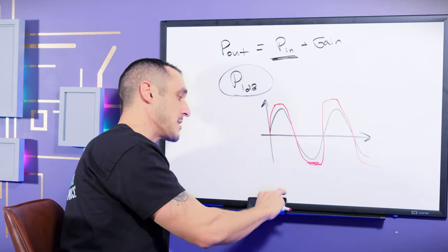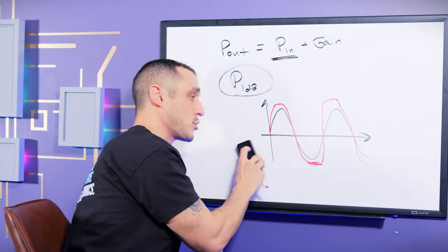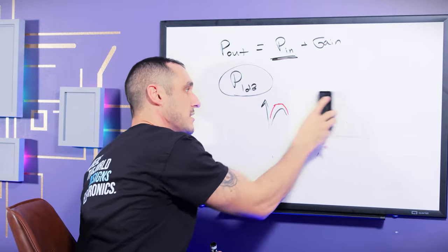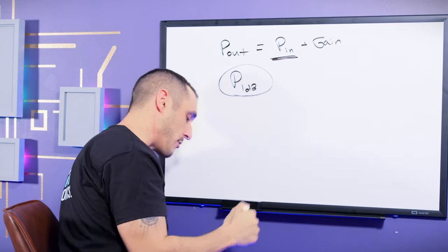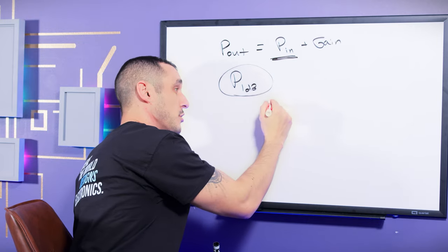And so this compression limit here defines a power input, which we call the P1dB limit. This is looking at it in the time domain, but typically we actually look at this in terms of a transfer function. We don't normally look at it in terms of the time domain. Now you could measure it looking in the time domain, but it's actually a lot easier if you measure it using a transfer curve.